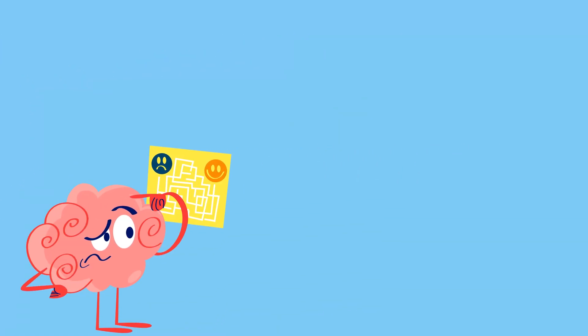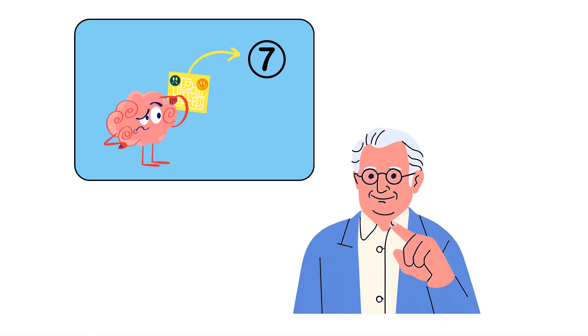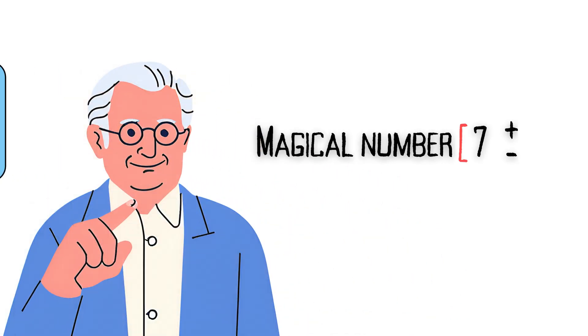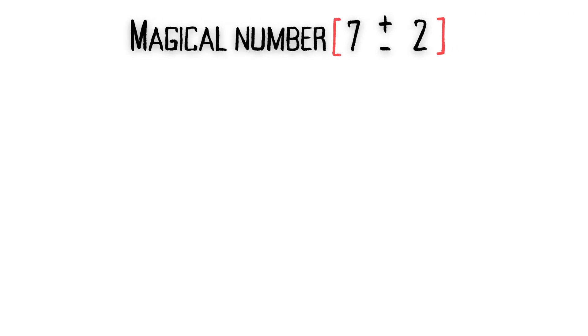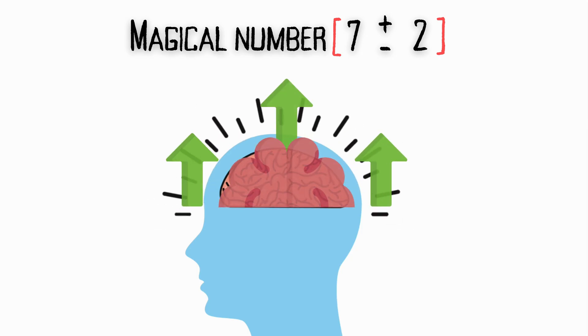Did you know that your brain's short-term memory can typically only hold about seven items at once? That's right. This concept was discovered by a brilliant psychologist named George Miller, and it's called the magical number seven plus or minus two. Intrigued? Stick around, because today we're diving deep into how your memory works, and we'll discuss some of the most powerful techniques to make it even better.